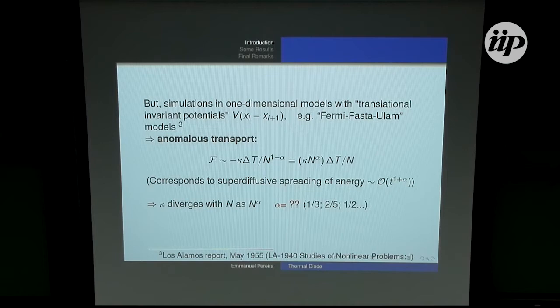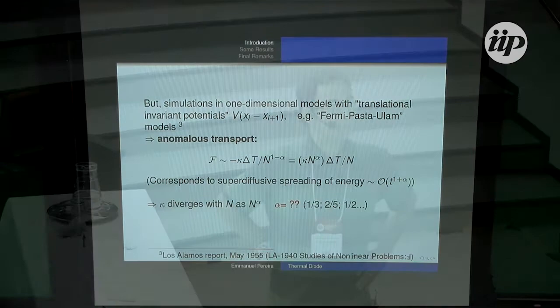For one-dimensional systems, we have a lot of numerical works related to translational invariant potentials, and also some theoretical work — for example, the Prosen-Campbell theorem, though there is a problem with the proof. Anyway, it says we will not find the Fourier law in such systems.